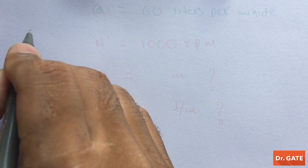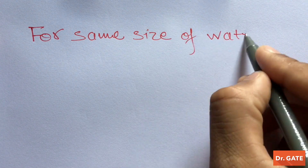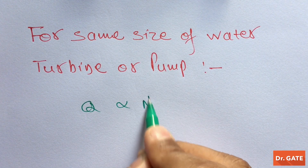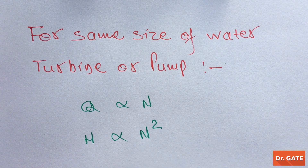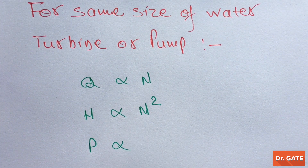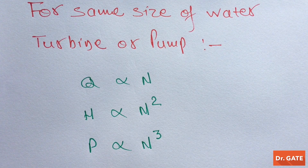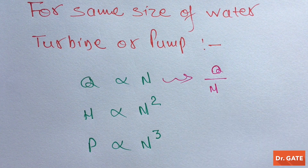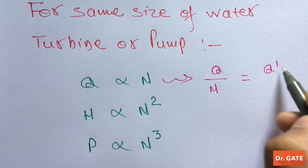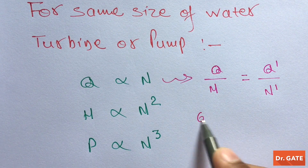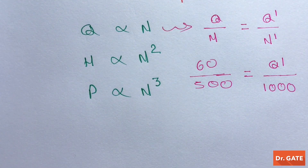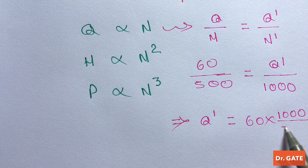From our previous class we know that for the same size of water turbine or pump, discharge is proportional to N, head is proportional to N squared, and power is proportional to N cubed. So from here, initial discharge upon initial speed equals final discharge upon final speed. Putting in the given values, the final discharge is 120 liters per minute.